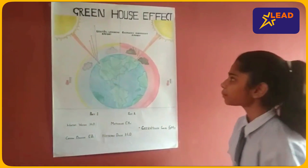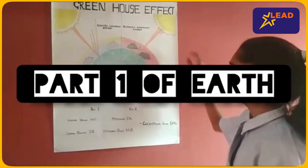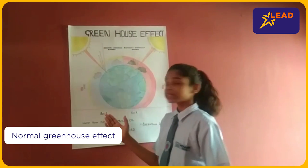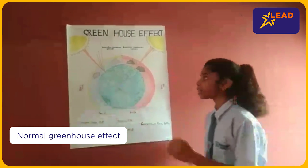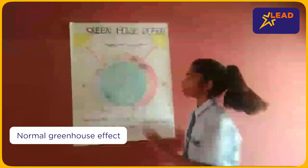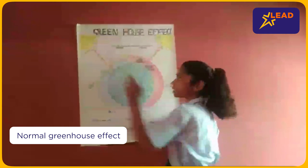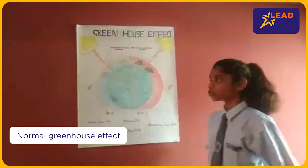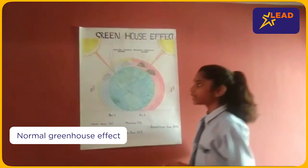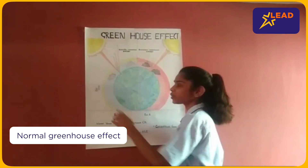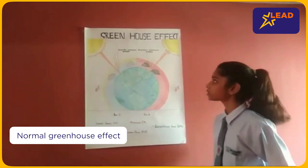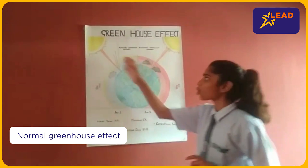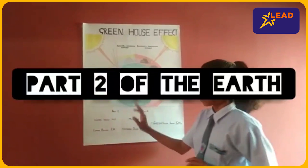For example, in Part 1, you are seeing that radiation is coming to the earth and some is reflected back to space. Due to this, the temperature is normal. That's why it is called the normal greenhouse effect.